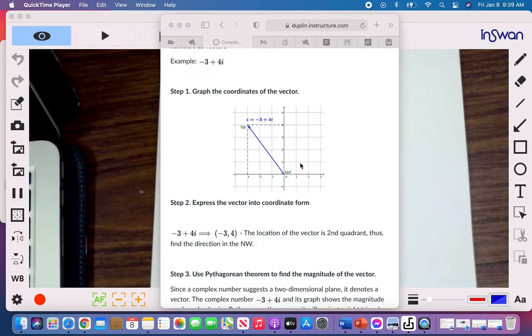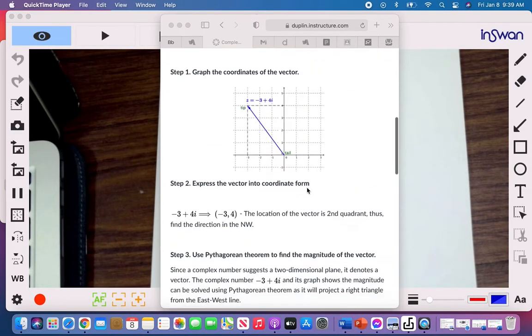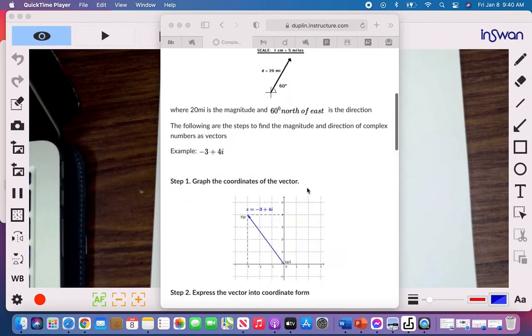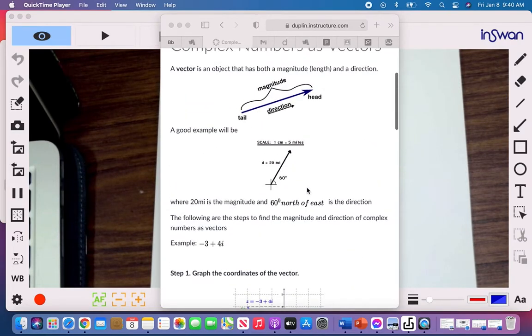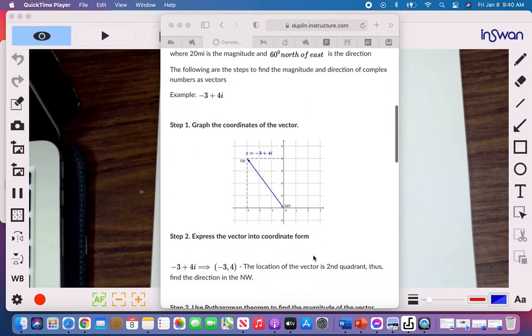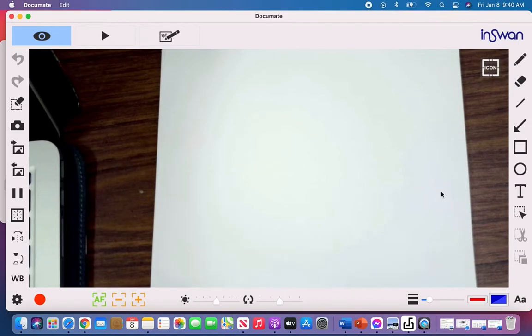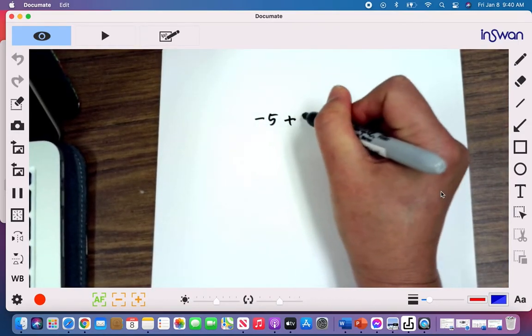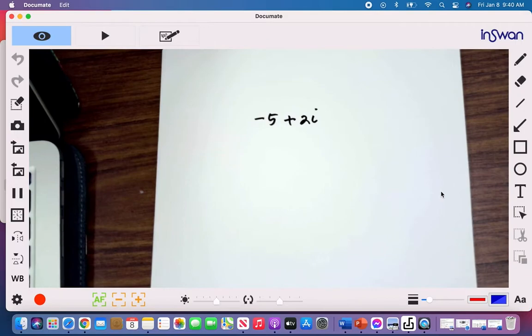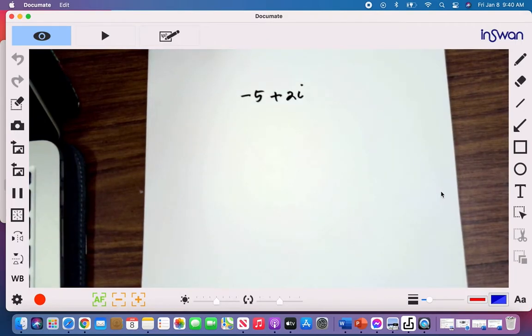In a complex number, we are following six steps to do that. So we will do the six steps procedure in order to find the resultant of the vector in a complex plane. For example, if I have negative 5 plus 2i, our first step is to express this in a coordinate form.